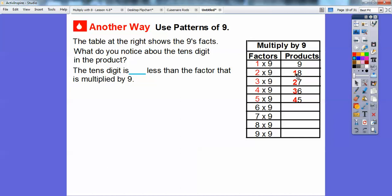Can you see that the tens digit over here is always one less than the number that was being multiplied by nine? That's one of the patterns about nine. The tens digit is always one less than the number that's being multiplied by the power of nine. So right here I'm going to put one less than the power that's being multiplied by nine. Now check this out.